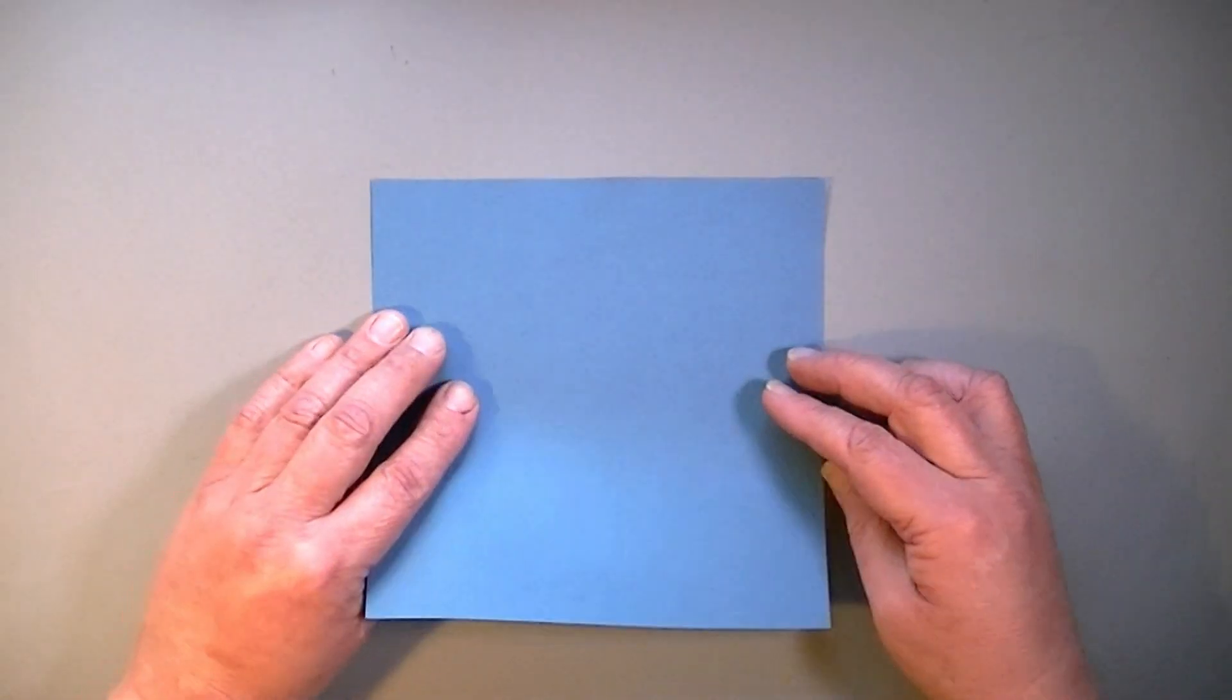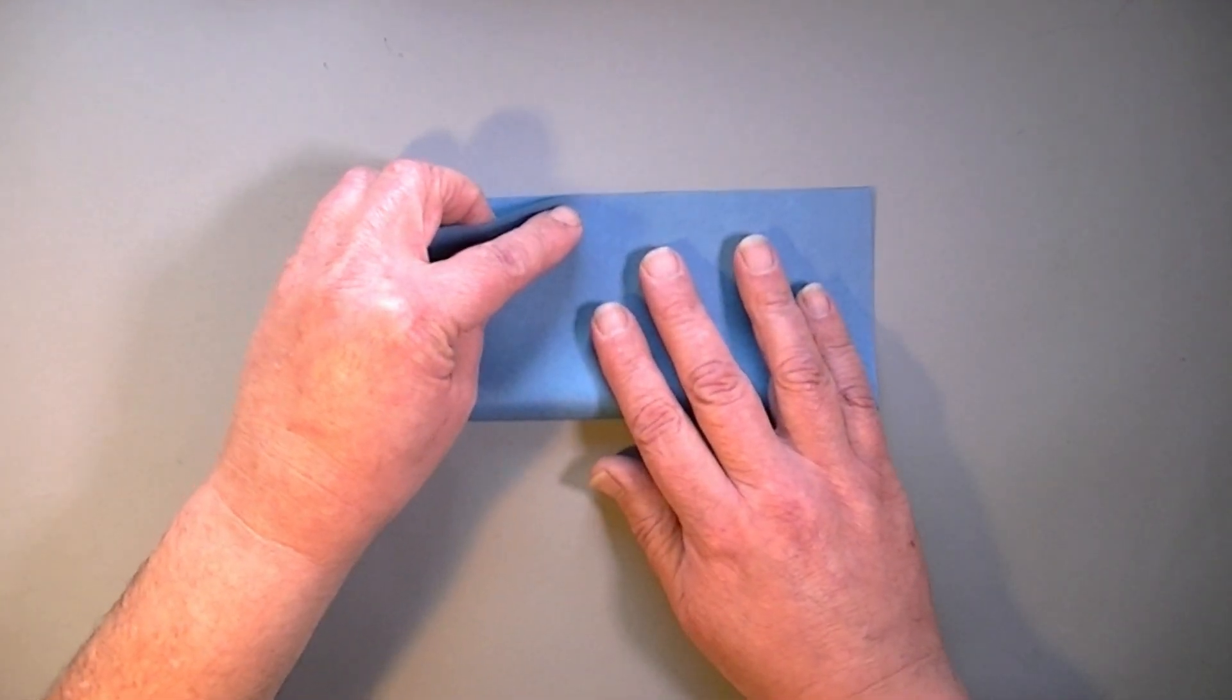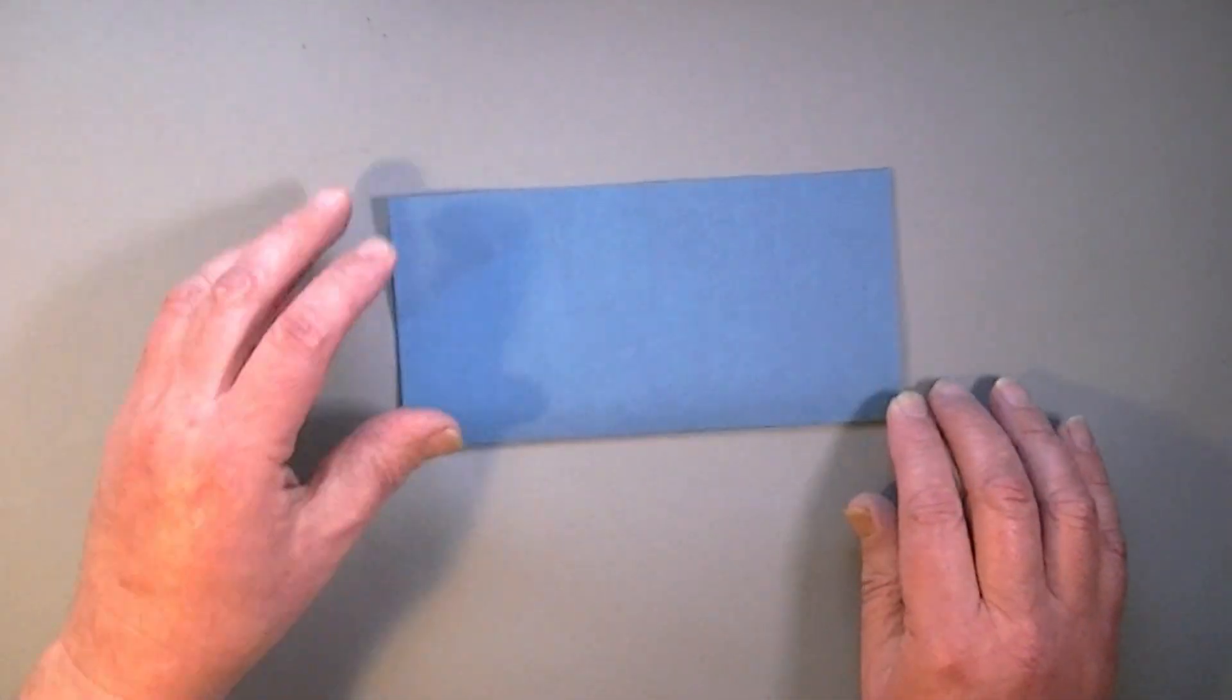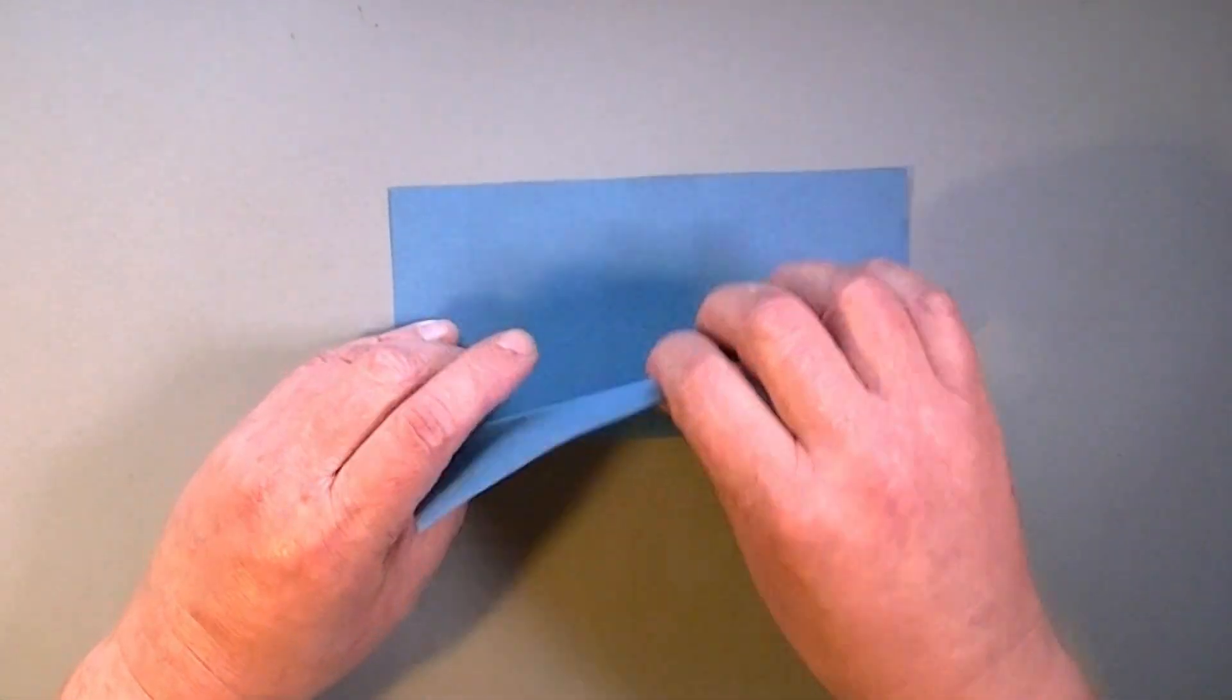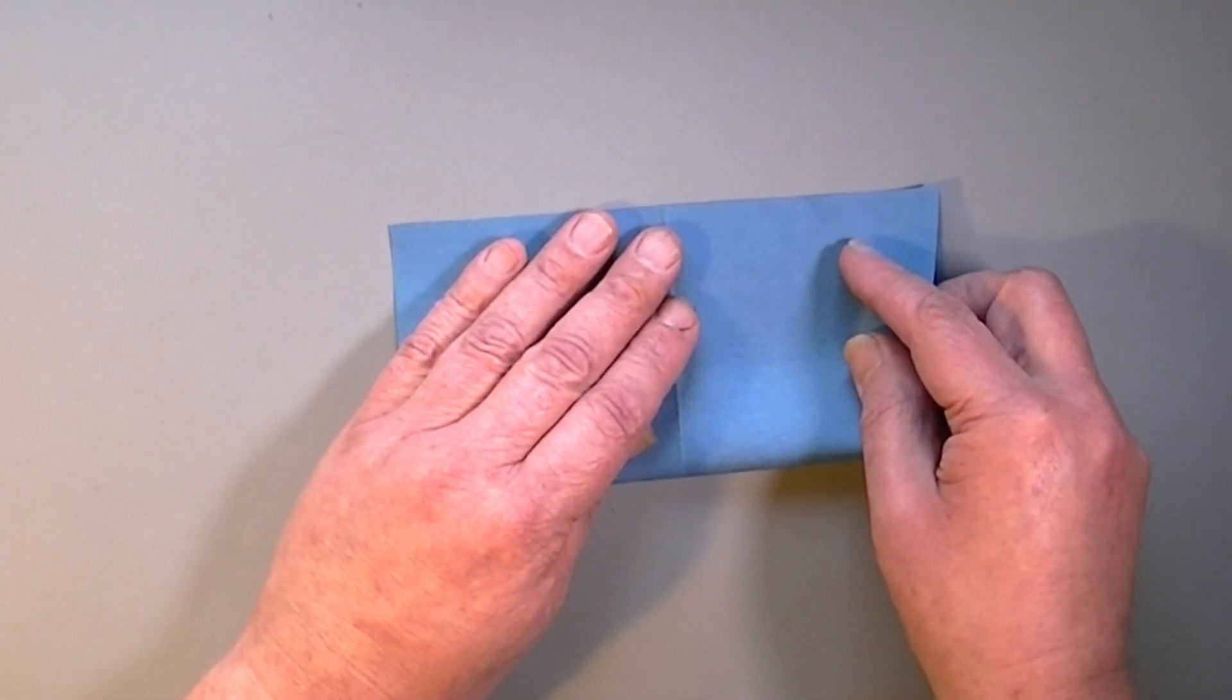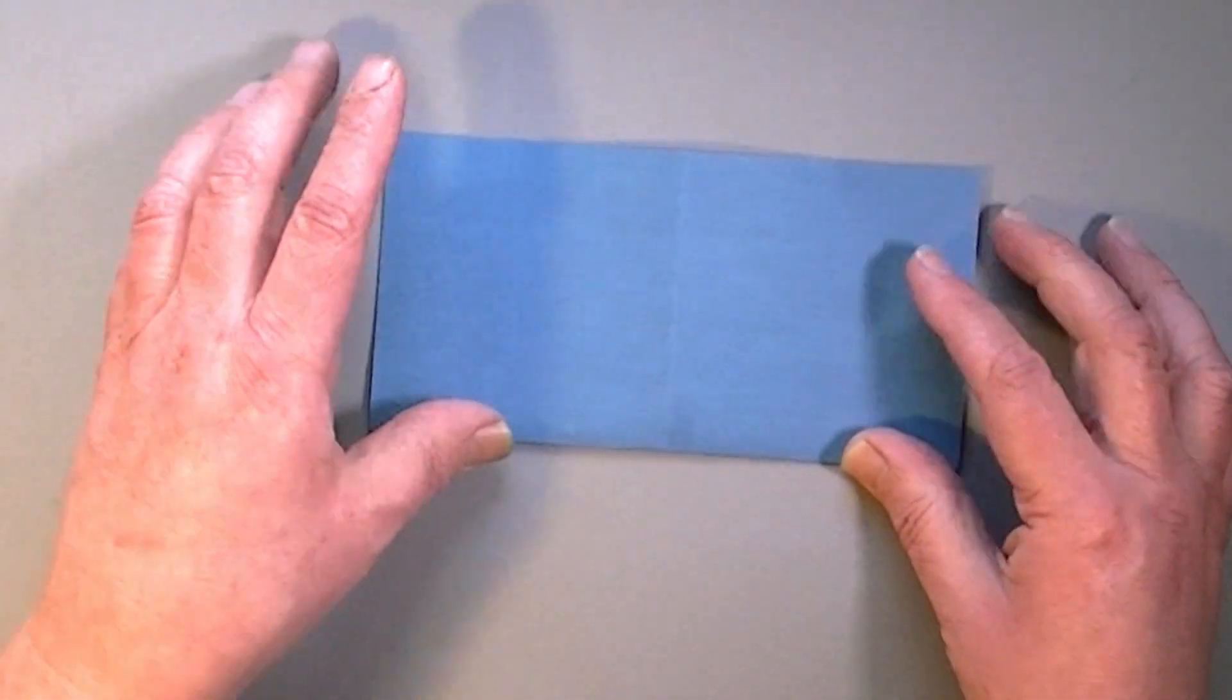So we're going to make a preliminary base. So we start by folding in half. I'm going to show you a slightly different way of folding this base. Normally - anyway, give me a second. So we fold in half both ways. So normally you would at this point open out and put in the diagonals on the other side, but what we're going to do is fold the end of the folded edge over to the upper edge.